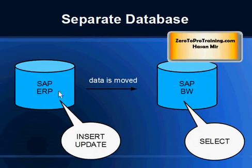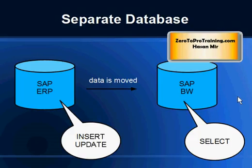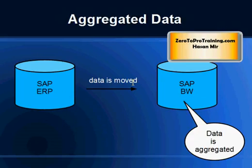You create two different databases because you don't want to perform heavy-duty queries in the same application that users are using to maintain day-to-day operations — this would put too much burden on the system and impact performance. So you move the data from your OLTP application to your OLAP application. This is the norm whether you are using SAP or another solution like Oracle.